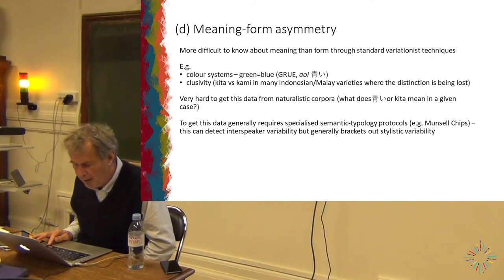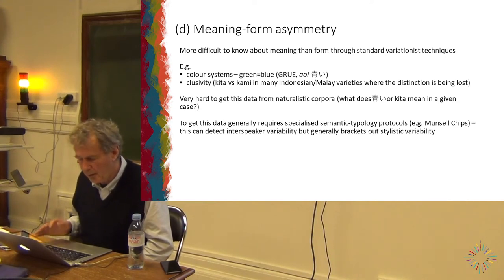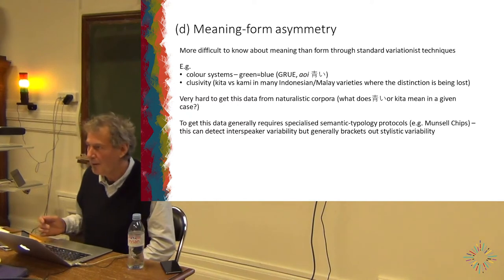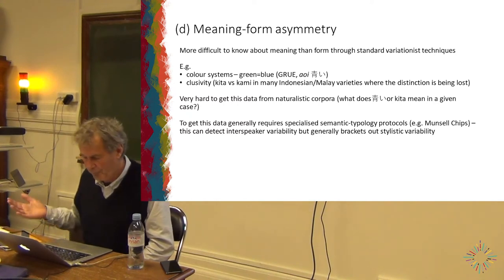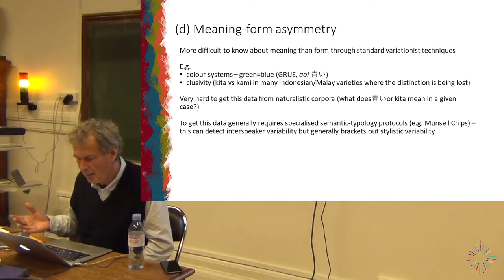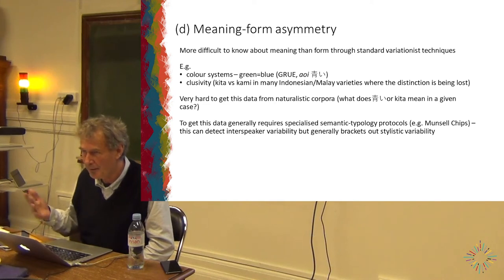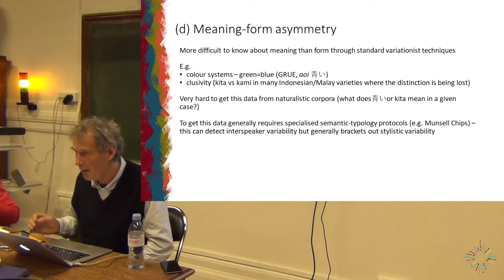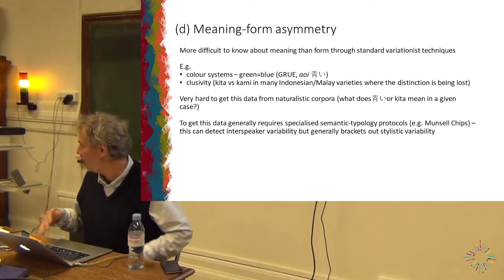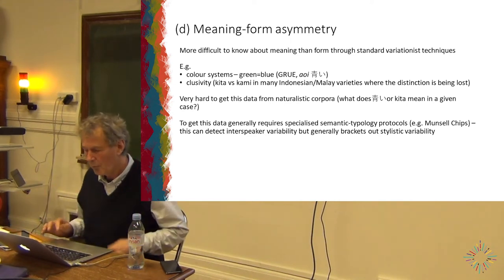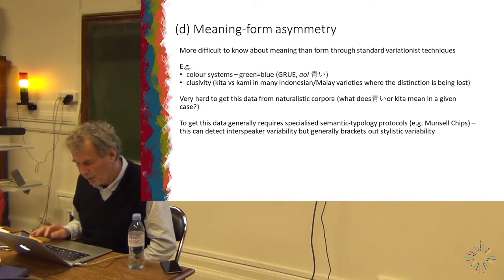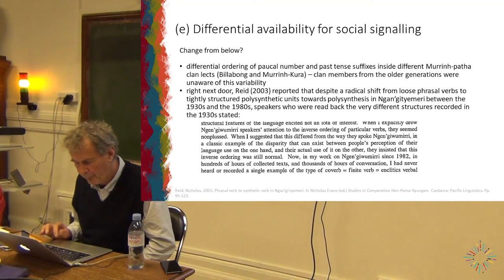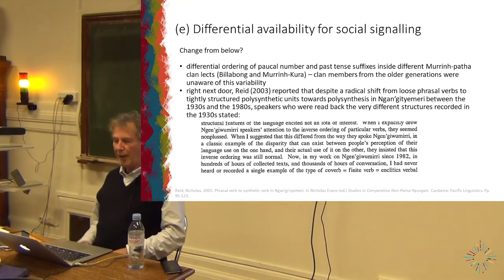The fourth reason for the micro-to-macro gap is meaning-form asymmetry. Standard variation techniques make it harder to find out about changes in meaning. If you have 1,000 hours of recorded Indonesian or Malay, and there are the forms 'kita' (inclusive) and 'kami' (exclusive), and one is coming to predominate, how do you know which meaning is being used? You have to supplement simple recording with methods that allow you to know what is being semantically represented.